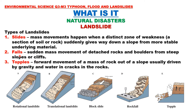Second type is falls — the sudden mass movement of detached rocks and boulders from steep slopes or cliffs. Third is topples — the forward movement of a mass of rock out of a slope, usually driven by gravity and water in cracks in the rocks.